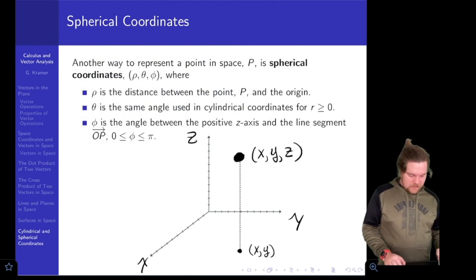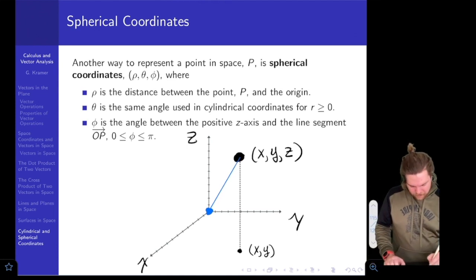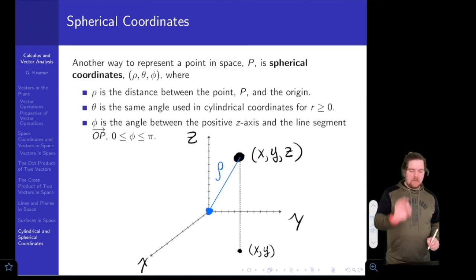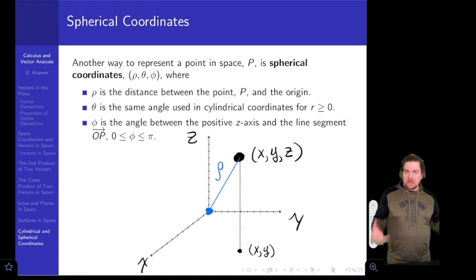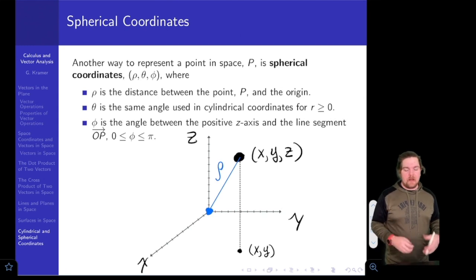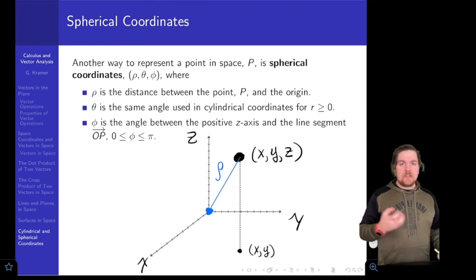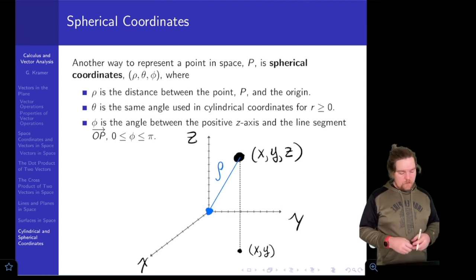The first distance we're interested in is rho, the distance from the origin to the point in question. We'll learn how to convert between rectangular and spherical coordinates — basically it's a distance formula. So rho squared equals x squared plus y squared plus z squared, or rho equals the square root of x squared plus y squared plus z squared.